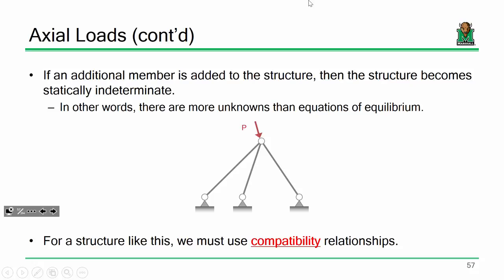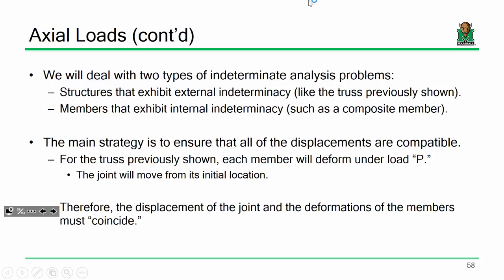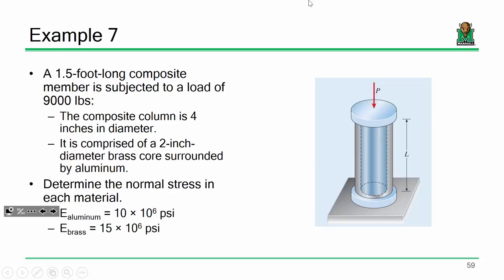In order to solve problems like this, we have to utilize what are known as compatibility relationships — the idea that not only do we have to satisfy equilibrium, but we have to satisfy the idea that the deformations must go along with one another for given members. An easy way of describing that was looking at this example where we had a composite column.